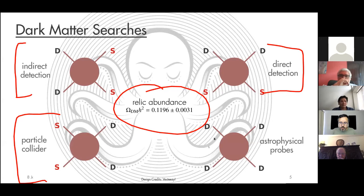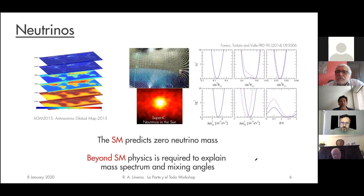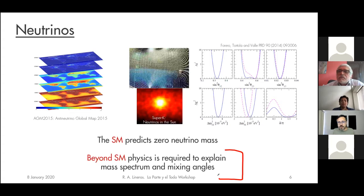The other part of the talk is related to neutrinos. Neutrinos are super interesting particles because the standard model predicts they are completely massless. But it is well established that neutrino oscillations imply neutrinos must be massive and must mix in a precise way between different flavors and mass eigenstates. So dark matter on one side and neutrinos on the other are both very interesting evidence that the standard model must be extended.